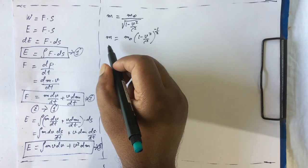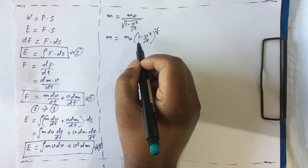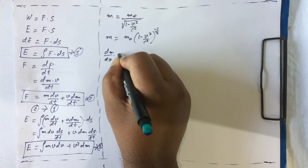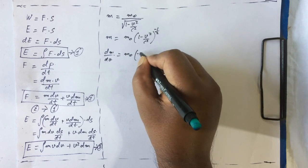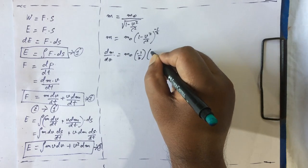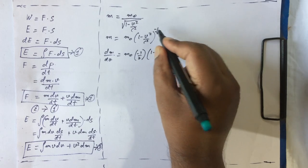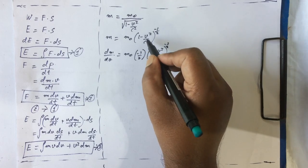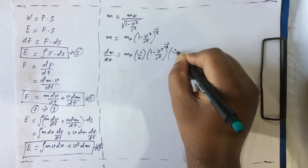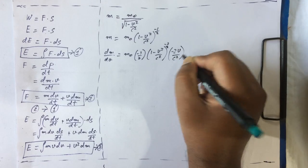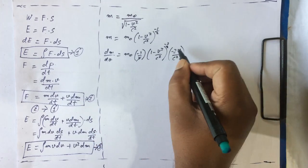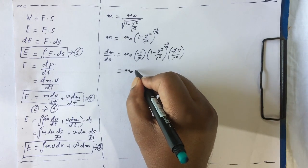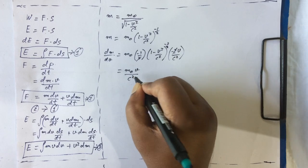If we differentiate this equation with respect to velocity, we will get dm/dv as m0 times (−1/2) times (1 − v²/c²) to the power of minus three-halves, multiplied by minus 2v/c². The 2 and 2 cancel, and minus times minus becomes plus, giving m0 times v/c².